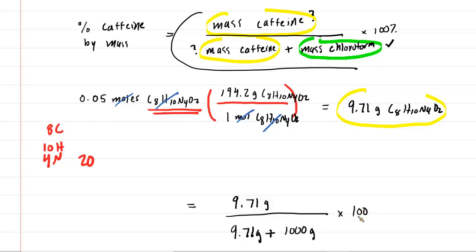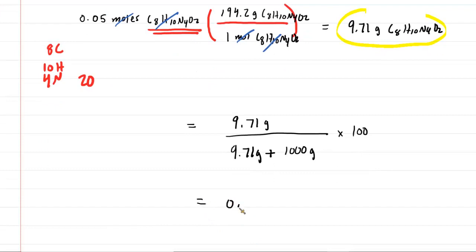And so if we work this out, we obtain a percent by mass of caffeine of approximately 0.96%. And that is of caffeine. So we'll write that formula one more time. That will be the correct answer to part A of the question.